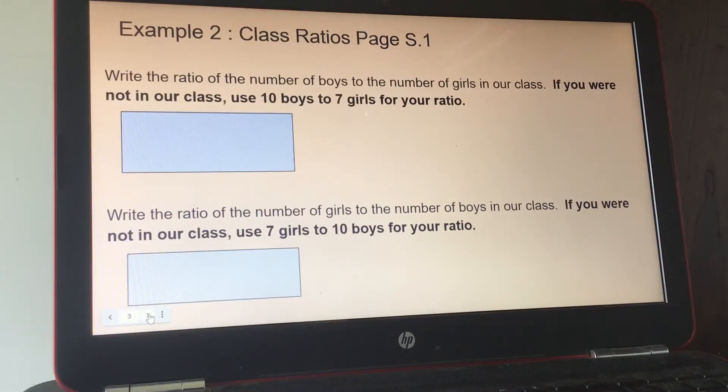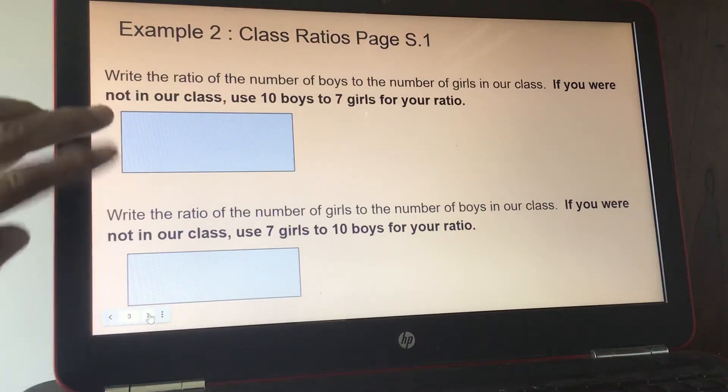Okay, we're still on page 1. Here's example 2. Write the ratio of the number of boys to the number of girls in our class. If you were not in our class, use 10 boys to 7 girls for your ratio. Write the ratio of the number of girls to the number of boys in our class. If you were not in our class, use 7 girls to 10 boys for your ratio. So in other words, I want to see how you write it.